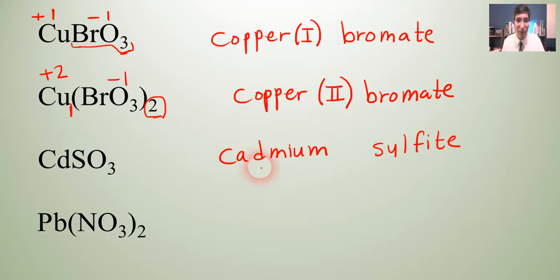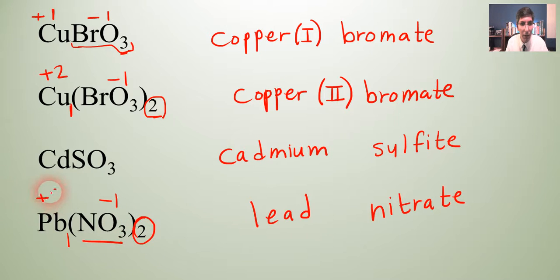The next example, we have Pb, which is lead. And then we have NO3. So we know that's nitrate. And so lead nitrate. And lead is not a transition metal, but it is one of those other elements, along with bismuth and tin. Lead is one of those that needs to have a Roman numeral in it, even though it's not a transition metal. So we have to unswap the charges here. So we can look at, there's a one here that goes with the nitrate. And so that two goes with the lead. So this is actually lead two nitrate.